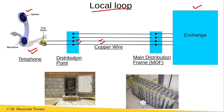This distribution point is also called the junction box, and this is the diagram of the distribution point or junction box. From the exchange side, there is a big cable coming which has many pairs of copper wires, and this cable terminates at the distribution point.